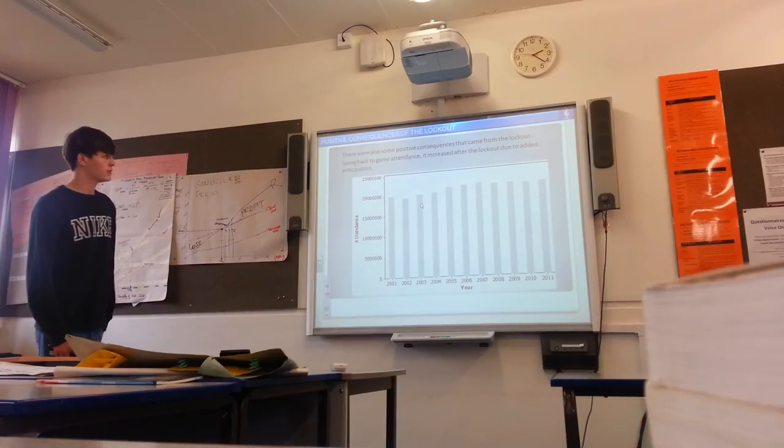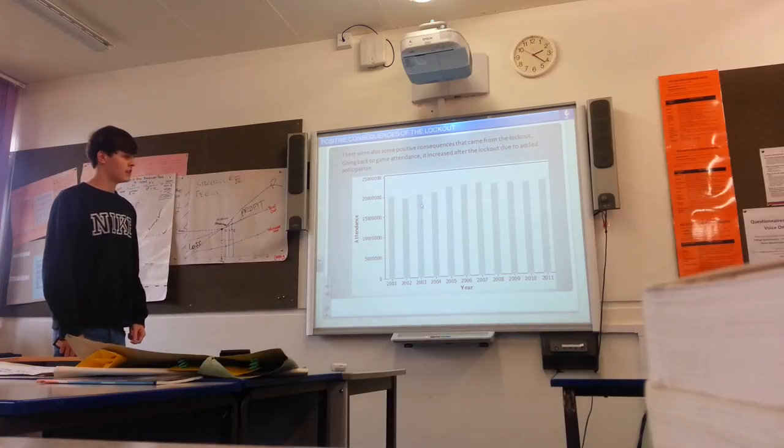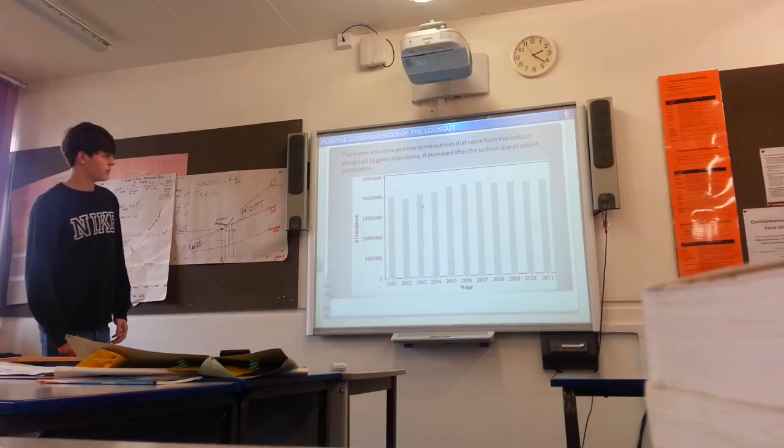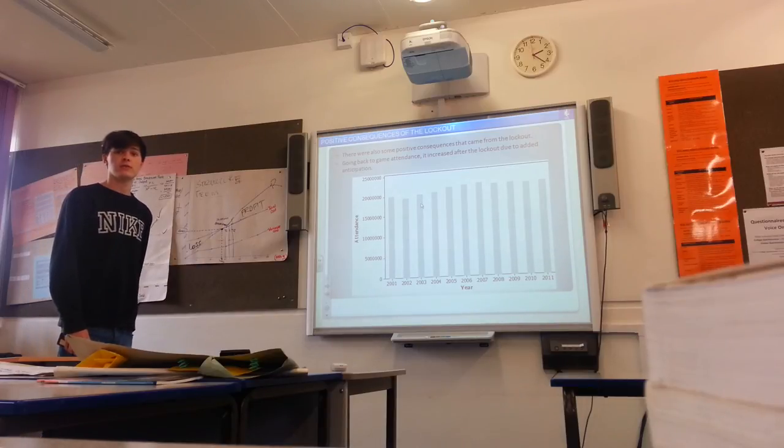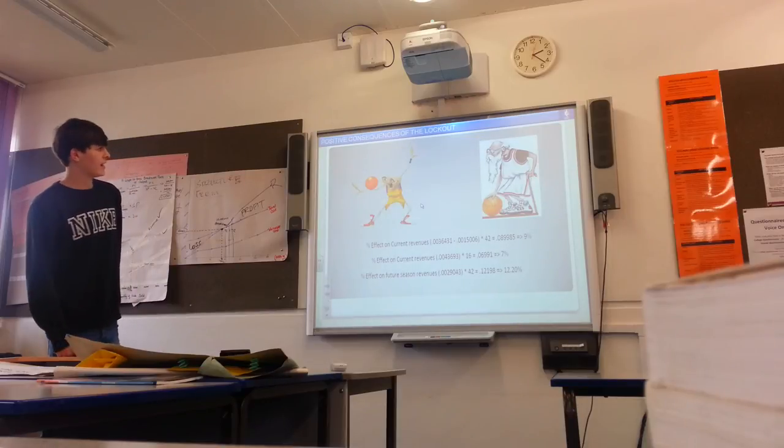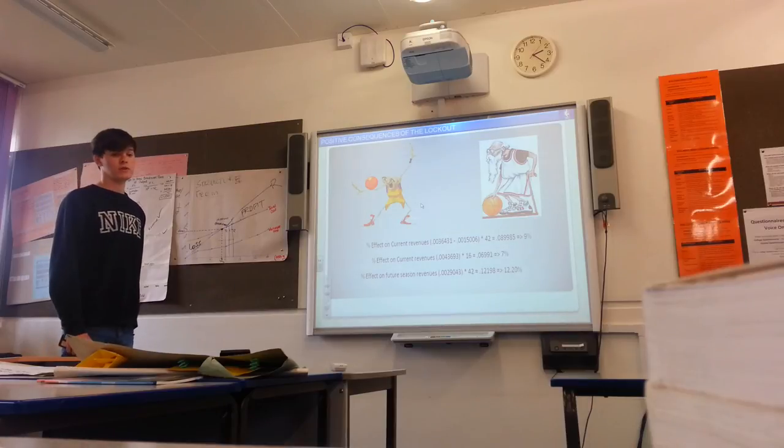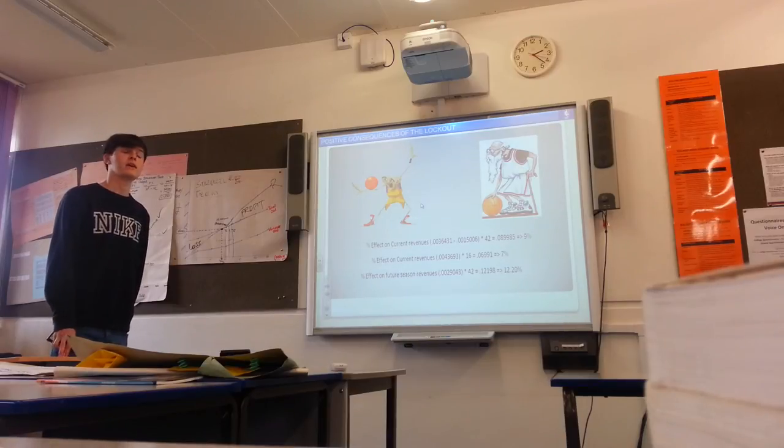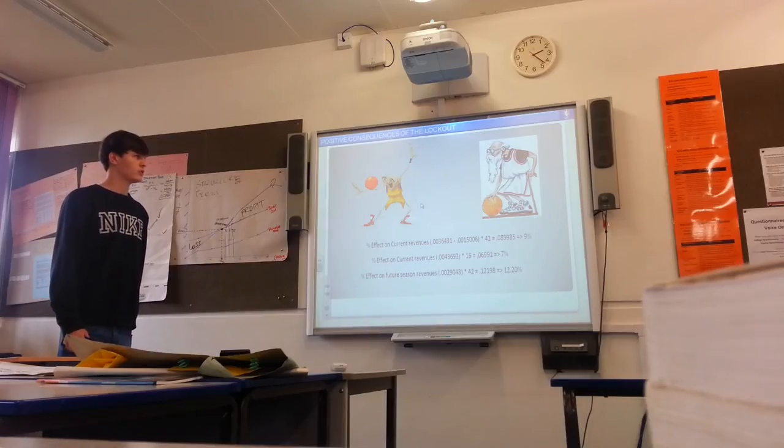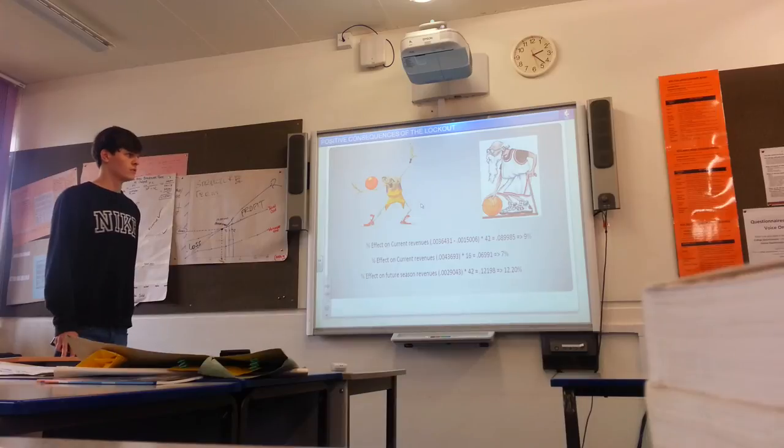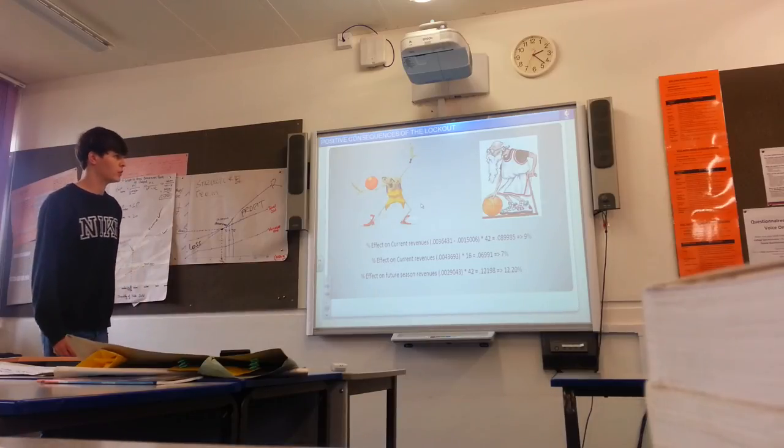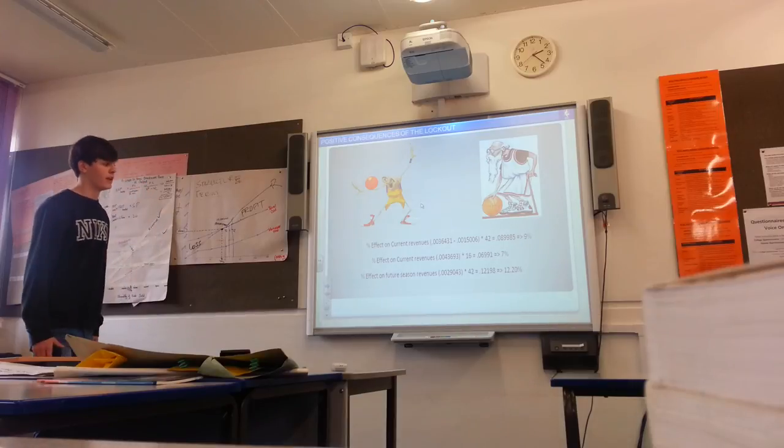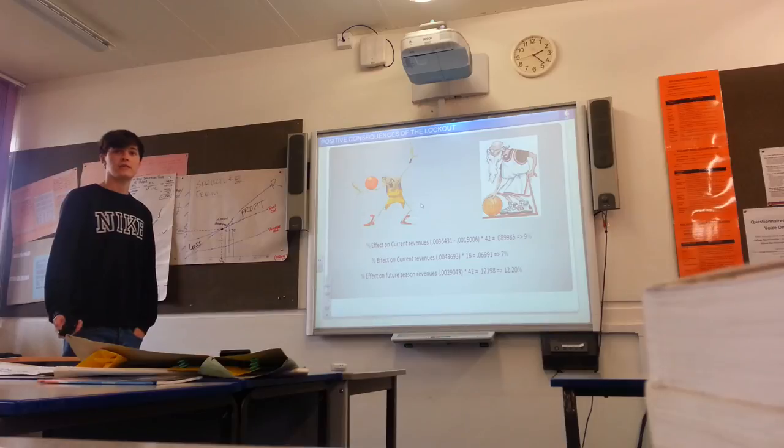And there were some positive consequences of the lockout. As I mentioned earlier, attendance actually increased the year after the lockout occurred in 2011. And that was mainly, as I said, due to anticipation for the next season. Also, it had a positive impact on older teams. So, a team with an older average age means a team with basically older players on it. And as I mentioned earlier, the Boston Celtics, when they acquired Kevin Garnett and Ray Allen, they were both over the age of 35. So, a short season basically means that it's going to be less physically demanding on the players, which means the older players are sort of equal to the younger players. And the year that the Boston Celtics won it was when Ray Allen and Kevin Garnett joined, so it proves that the older teams basically benefited from it.